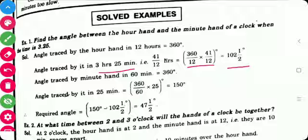Next is angle traced by minute hand in 60 minutes is 360 degree. So, angle traced by it in 25 minutes is 360 into 25 divided by 60. So, this is the equation. It is 150°.